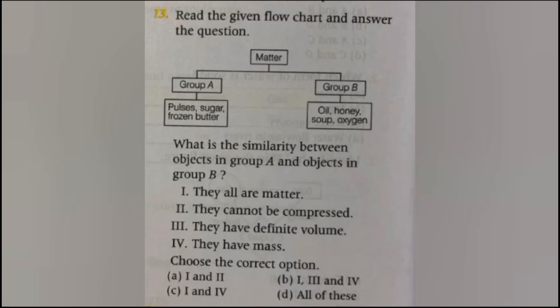Read the given flowchart and answer the questions. What is the similarity between the objects in group A and objects in group B? First, they are all matter. Second, they cannot be compressed. Third, they have definite volume. Fourth, they have mass. Choose the correct option. The answer is C, statement first and fourth.